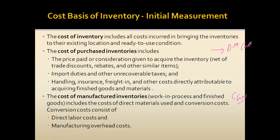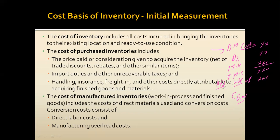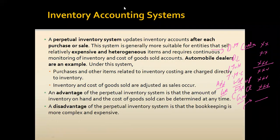The formula starts with direct material consumed, then you add direct labor, and further you add manufacturing overhead. When you add these three elements you have the total manufacturing cost. Then you adjust work-in-process inventories: add opening WIP and subtract closing WIP to get the cost of goods manufactured. Work-in-process inventory refers to partly completed goods — for example, furniture where structures are ready but not yet polished.